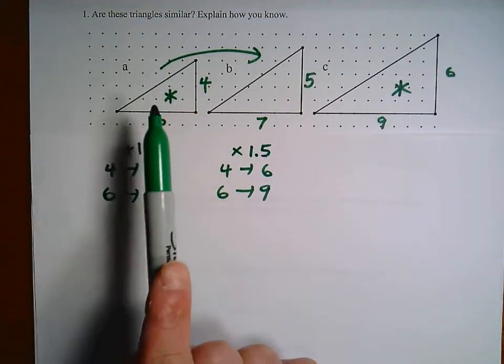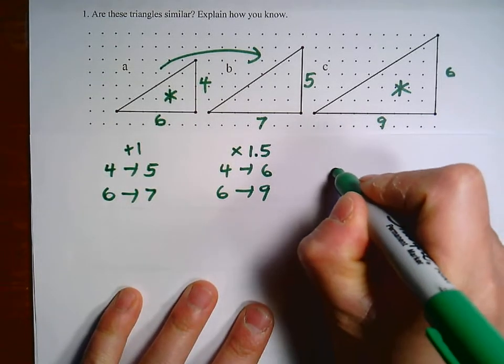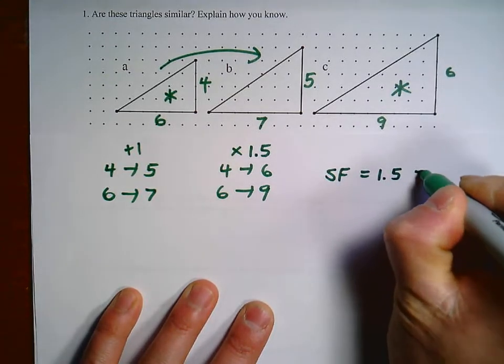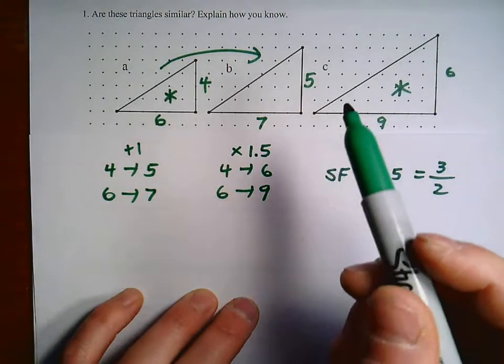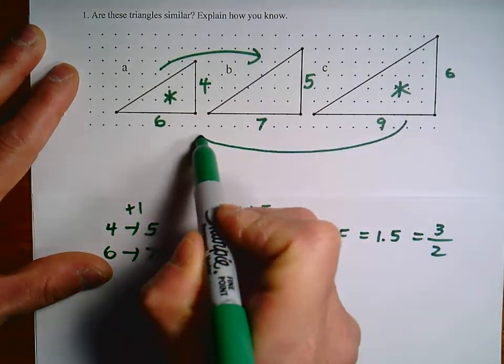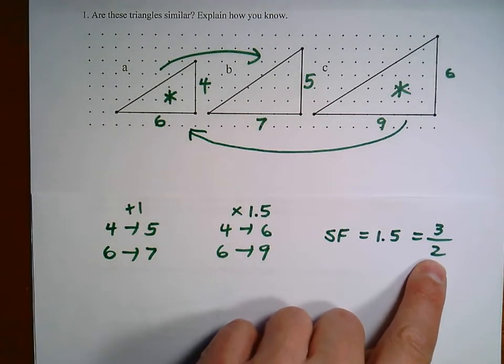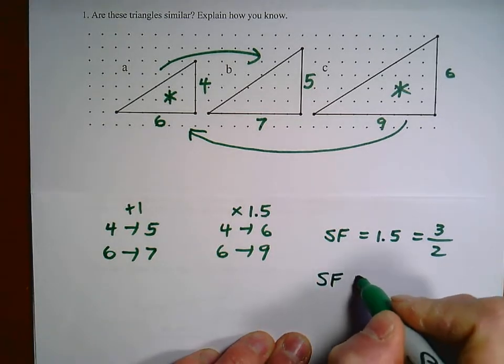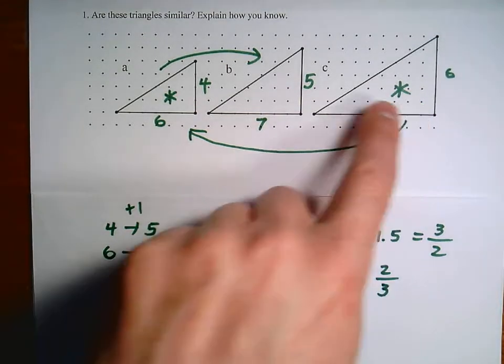And the scale factor, if you're using this one as the reference, is going to be one and a half. So we could say here scale factor is 1.5, as a fraction we write that as three halves. Keep in mind, if you go the opposite direction, so if we're going to go this way, then our scale factor is not going to be three halves but it's going to be two thirds, right? So everything is going to be reversed.